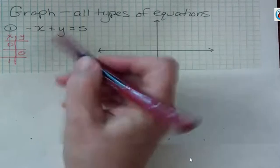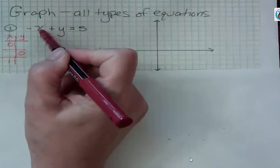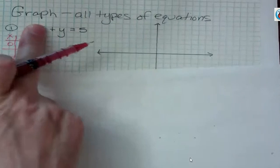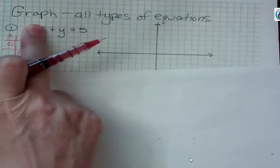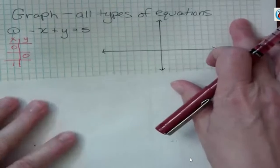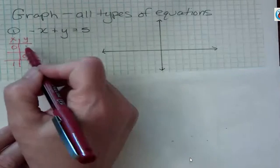If x is 0, I have negative 0. Do you agree that if x is 0, that x term is just going to fall out, and I'm just going to be left with y equals 5? That's like the cover-up method, but I could plug in 0 and write down 0, but it's not going to make any difference. y is going to be 5.